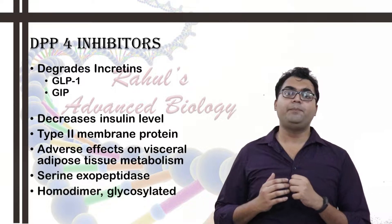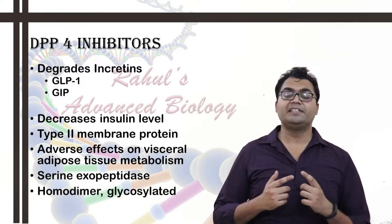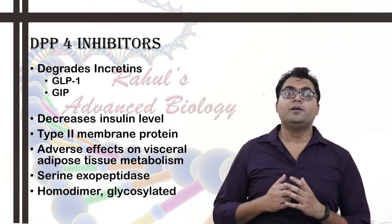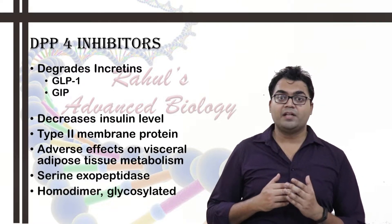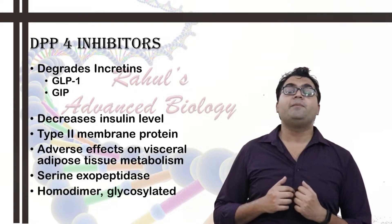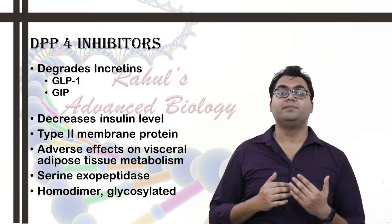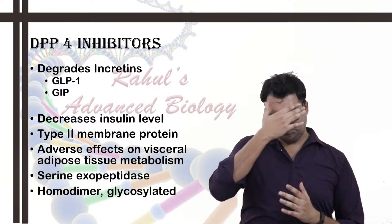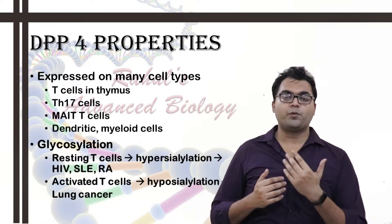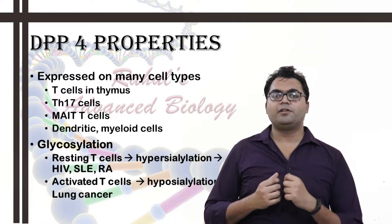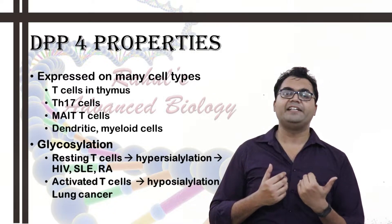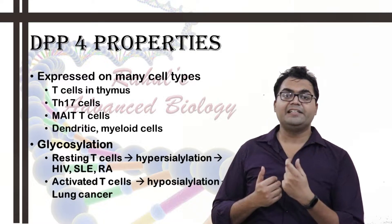In medical terms, DPP-4 degrades incretins which stimulate the synthesis or up-regulation of insulin — incretins like GLP-1 (glucagon-like peptide-1) and glucose-dependent insulinotropic polypeptide. By degrading these incretins, it down-regulates or lowers the bioavailability of insulin, thereby adversely affecting the metabolism going on in the visceral adipose tissue. It can also trigger a pro-inflammatory response. This glycosylation involves the addition of a glycosidic or glucose residue via an enzyme, which is different from glycation where glucose residues are added without enzyme catalysis.